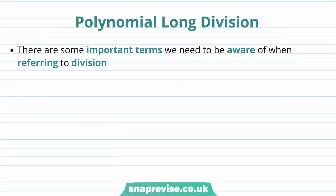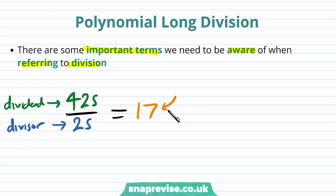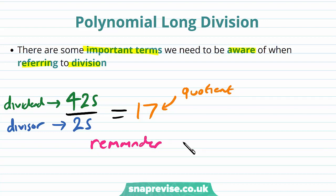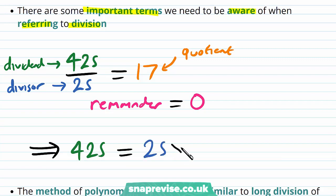So what exactly is polynomial long division? There are some important terms we need to be aware of when referring to division. Let's say we have 425 divided by 25. The result of this is 17. We call the 425 the dividend, we call the 25 the divisor, and we call the 17 the quotient. In this case we have a remainder of 0 — 25 goes into 425 exactly. We can rearrange this as: 425 = 25 × 17 + 0. So our dividend equals our divisor multiplied by our quotient plus our remainder.